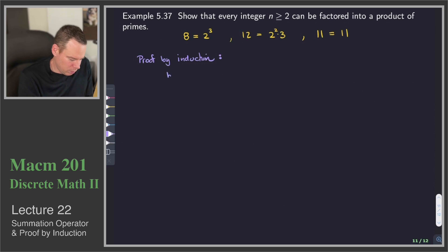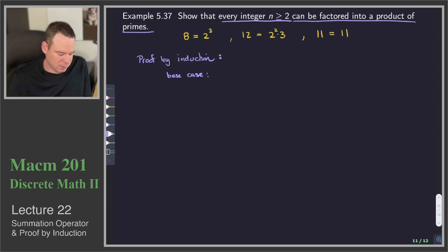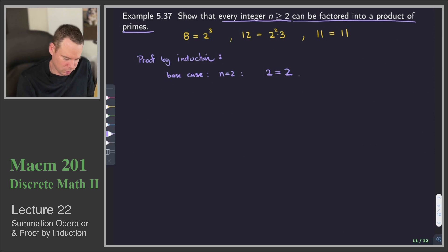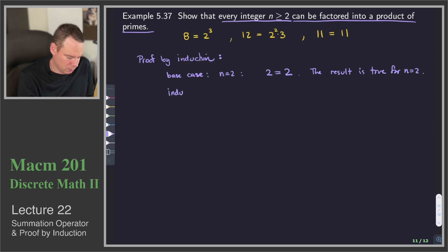Proof by induction — a review of proofs by induction to refresh our memories. We need to start with a base case. Our statement is that every integer n greater than or equal to 2 can be factored into a product of primes. Base case: n equals 2. Well, 2 is just equal to 2, which is a product of just one prime, so the result is true for n equals 2.